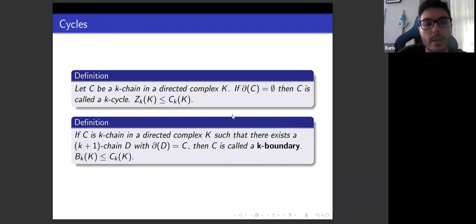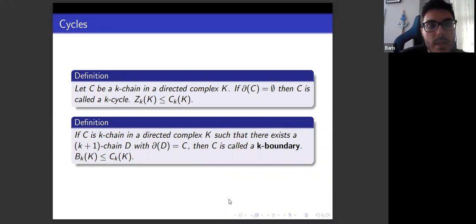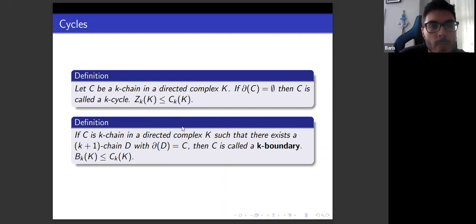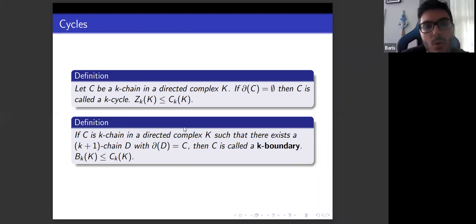Let's define cycles and cycle groups, and boundary groups. Let c be a k-chain in a directed complex. If the boundary of c is empty, then we call c a k-cycle, denoted Z_k. The k-cycle group is a subgroup of the k-chain group. A chain which is not a cycle cannot enclose a cavity or loop. Thus, cycles are important in determining the shape of the object.